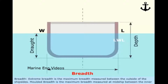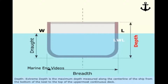Extreme Depth is the maximum depth measured along the center line of the ship from the bottom of the keel to the top of the uppermost continuous deck. Depth is the vertical distance measured along the ship side from the top of the keel to the uppermost continuous deck.